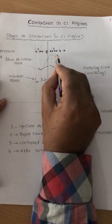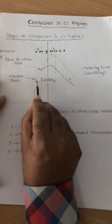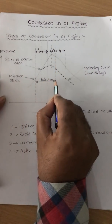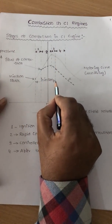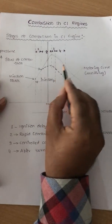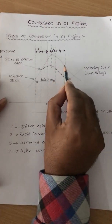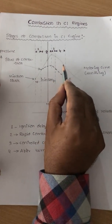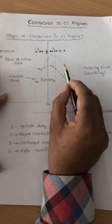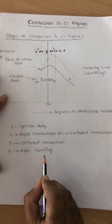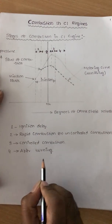The fourth stage of burning is after burning. Even after fuel has stopped being injected into the combustion chamber, the combustion still continues to some extent because of dissociation and reassociation. That is called the fourth stage of burning — after burning.